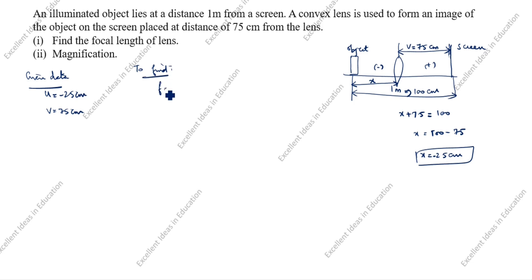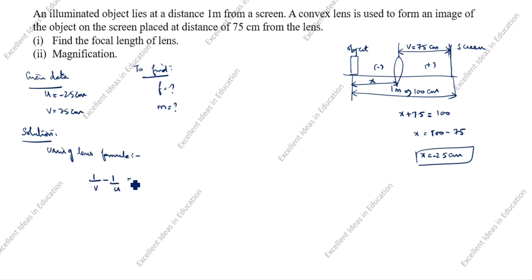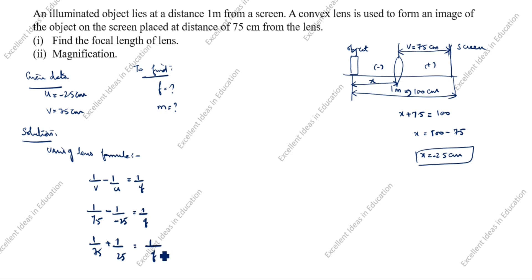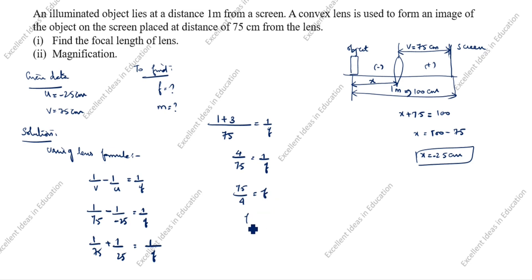We need to find the focal length f and the magnification. Using the lens formula: 1/v minus 1/u equals 1/f. Substituting: 1/75 minus 1/(minus 25) gives 1/75 plus 1/25, which equals 1/75 plus 3/75, giving 4/75 equals 1/f. Therefore f equals 75/4, which is 18.75 centimeters.